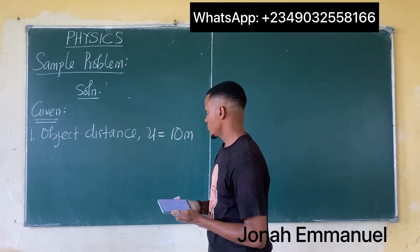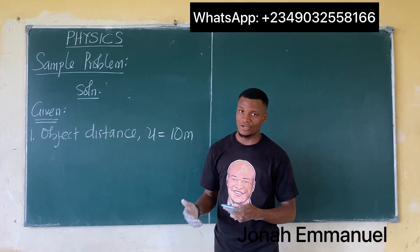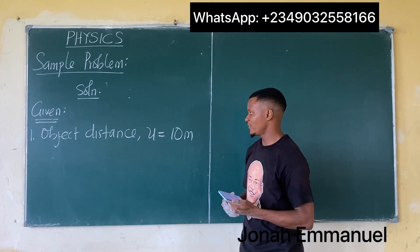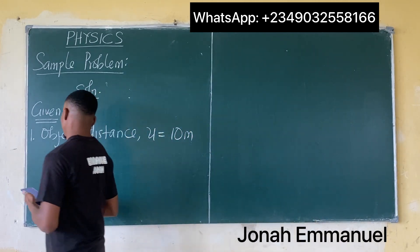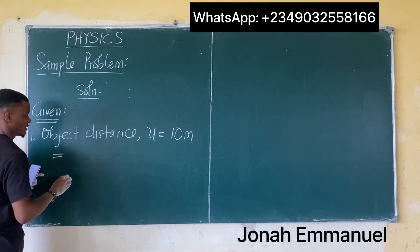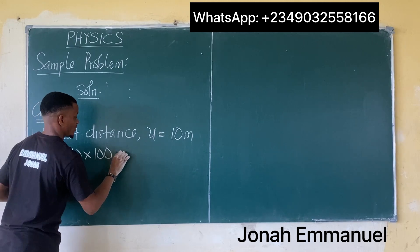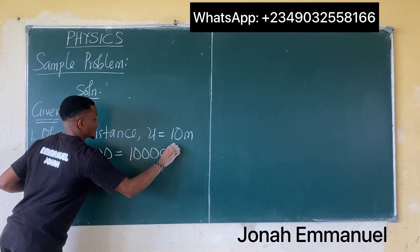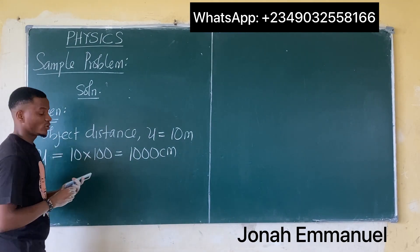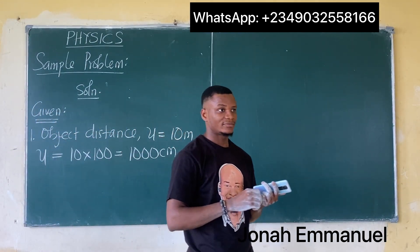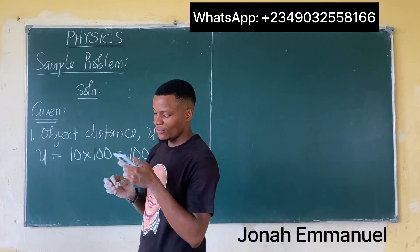When it comes to optics, we use distances in centimeters and not meters. So since I'm given 10 meters, I have to convert it to centimeters by multiplying by 100. That becomes 10 times 100, equal to 1000 centimeters. So u is equal to 1000 cm.